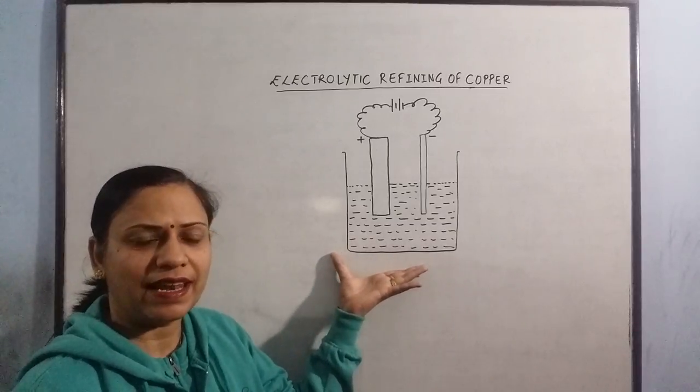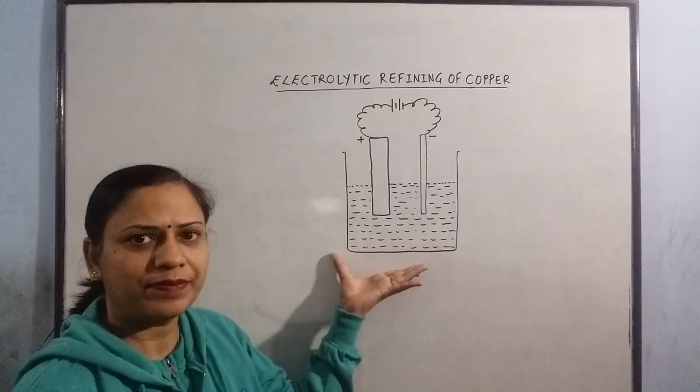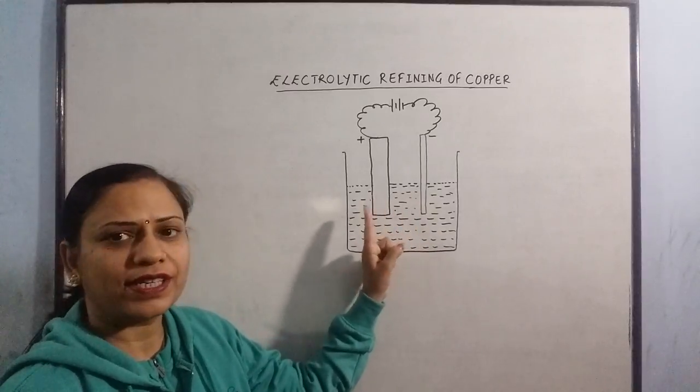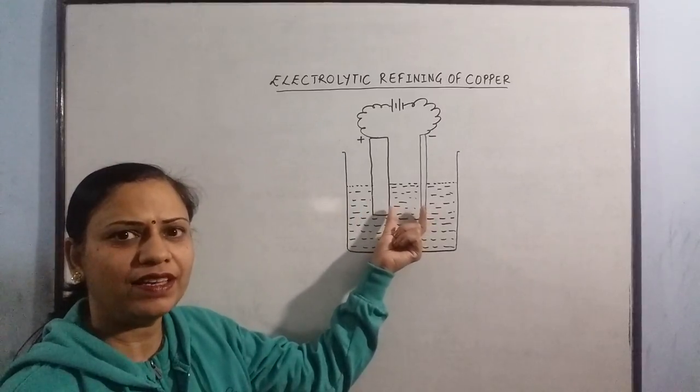This diagram shows a cell in which we are going to carry out the process of electrolysis. You can see two rods here. One rod is thick and one rod is comparatively thinner.